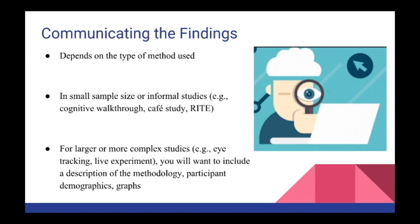Finally, in conclusion, the chapter ended on communicating the findings. This discusses how to document the findings in order to avoid repeating any of the same mistakes. It is often important when using a small sample size or informal studies to consider the evaluation such as cognitive walkthrough, a CAFE study, or RITE. In contrast, when using a larger or more complex study, one might consider using eye tracking, live experiments, or other sorts of methodologies that would need a much larger study. You would want to include a description of this methodology, participant demographics, and graphs.